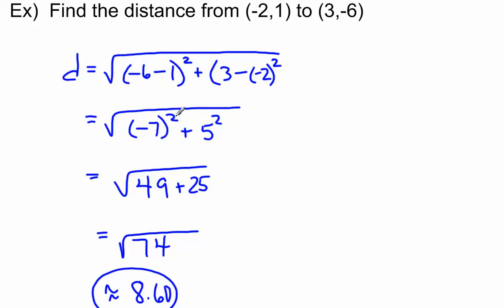And then what I have here is a negative 7 squared, which is 49, 5 squared, which is 25, and that gives me the square root of 74. Put that in our calculator, and we should get approximately 8.6.